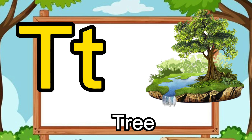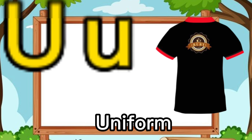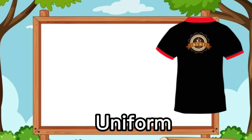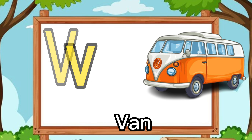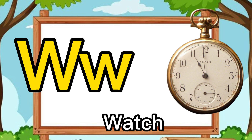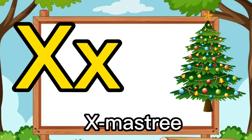T for green. U for unicorn. V for bunny. W for watch. X for x-ray mystery.